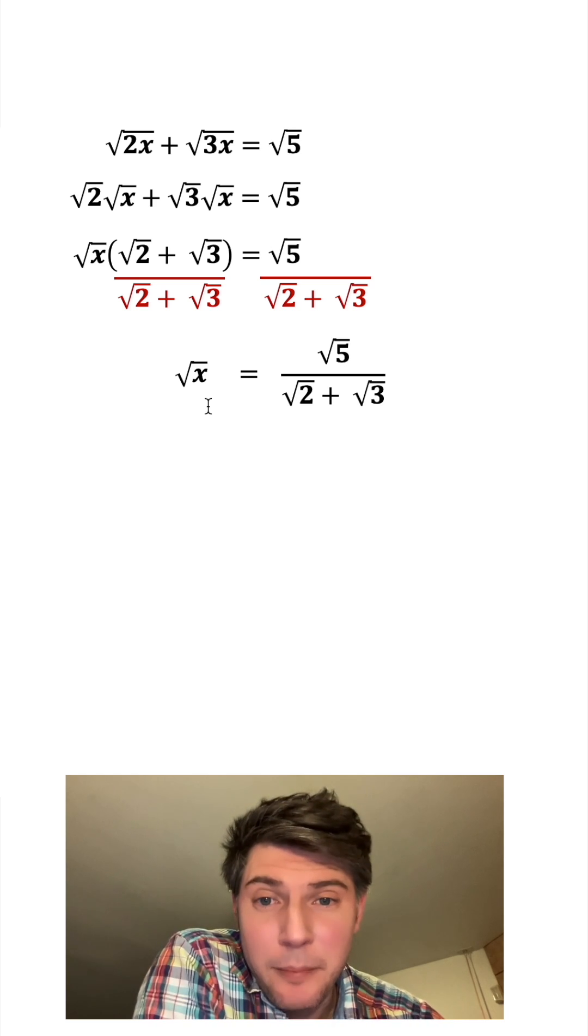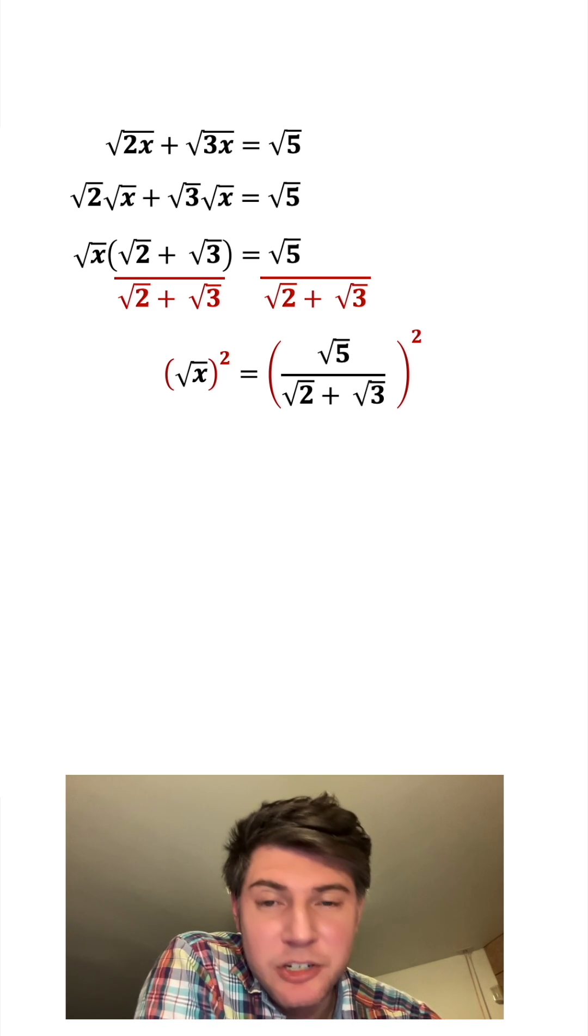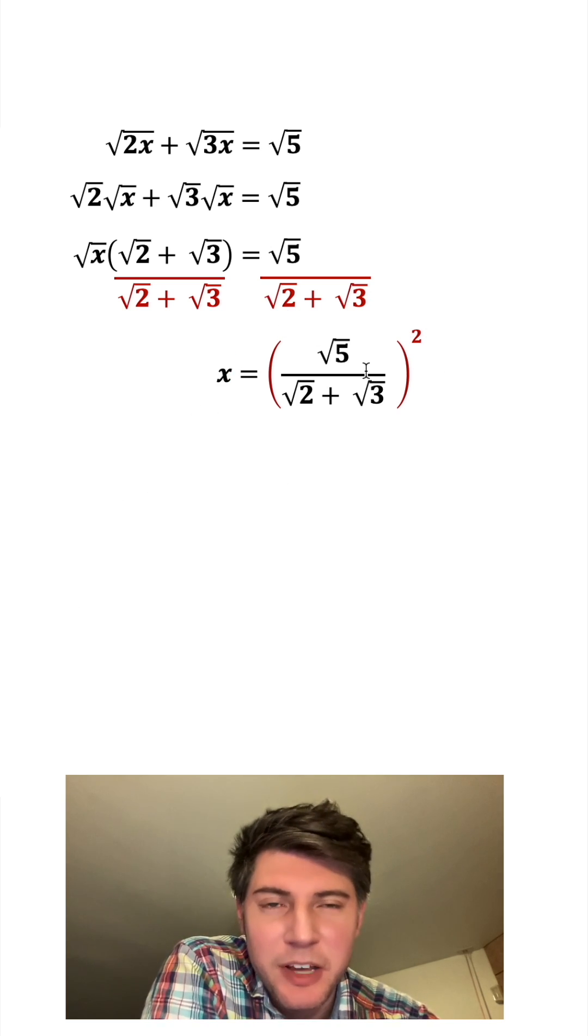So now the only thing stopping the x from being alone is this square root. So if we square both sides, this left-hand side will now just become x. But we can simplify this quite a bit.